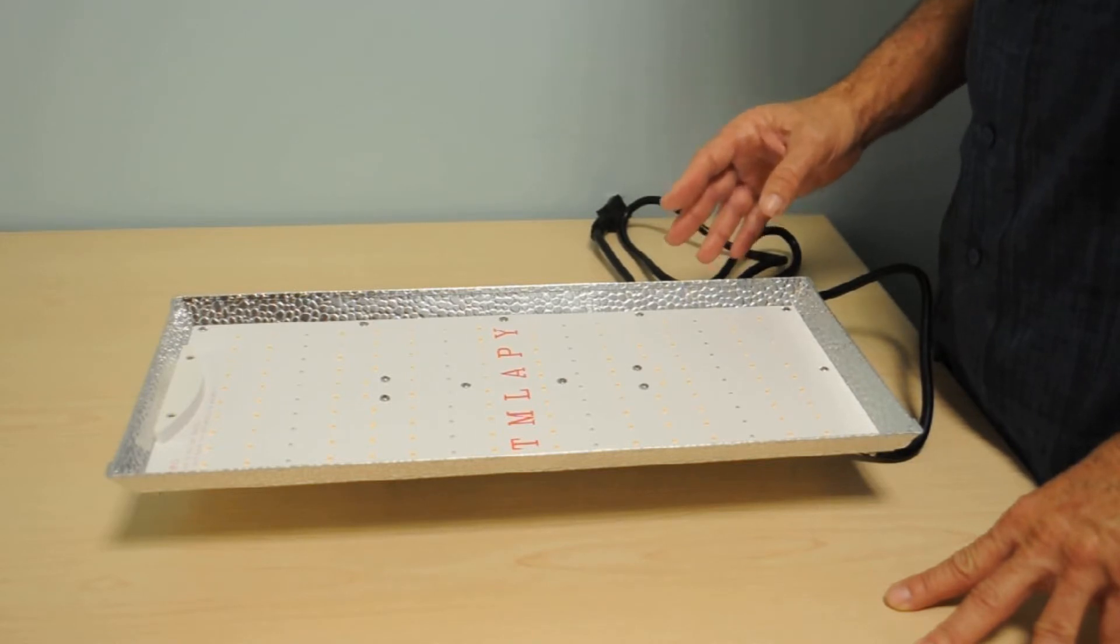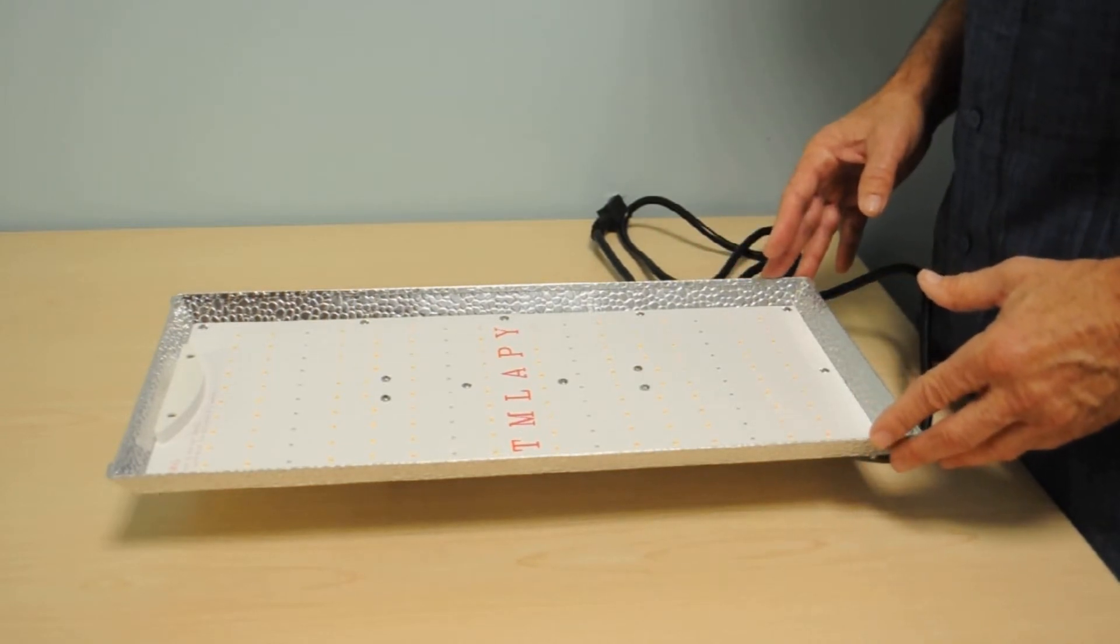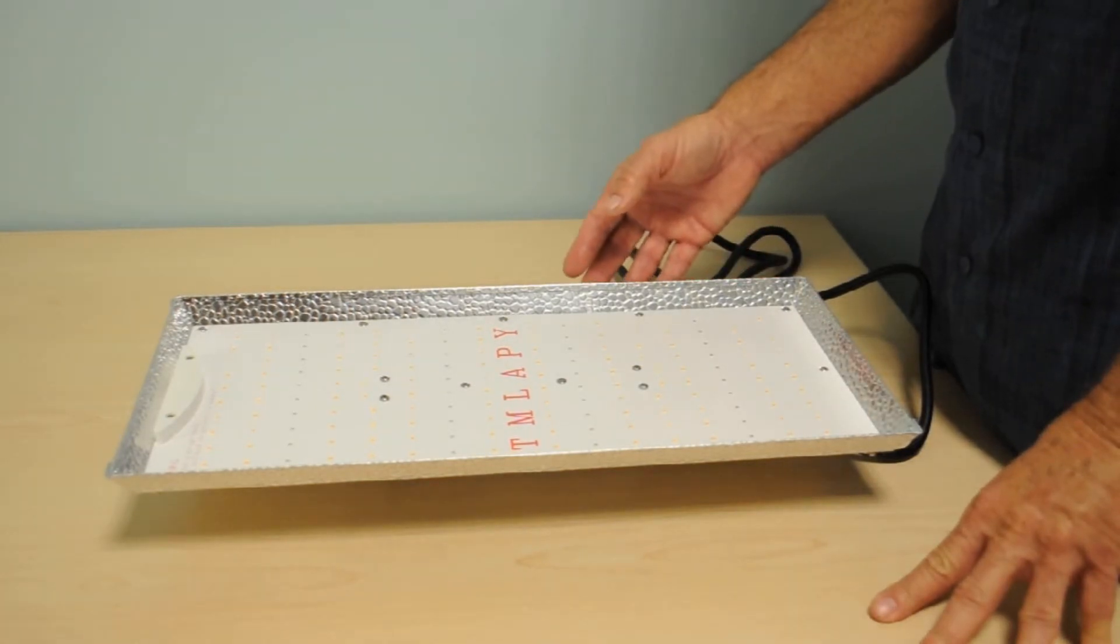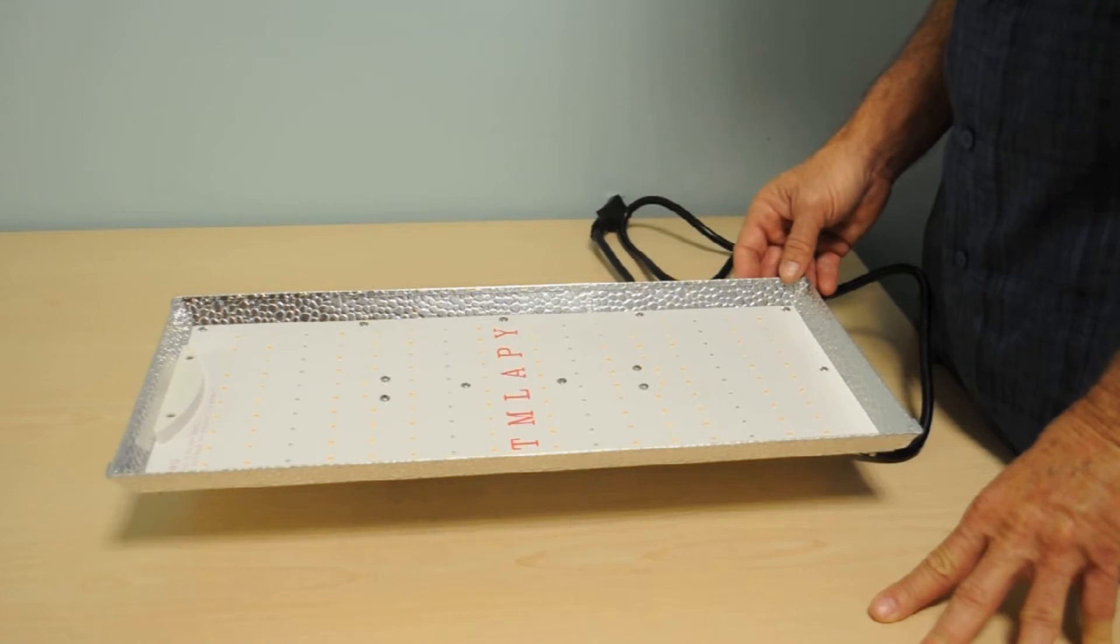They produce a natural white sunshine type of spectrum, which seems to be the trend these days. Recent research is showing that plants do respond to light spectrum other than red and blue. Growers have been embracing these new lights and the results have been very impressive, so it does appear that the old blurple lights are going to be a thing in the past.